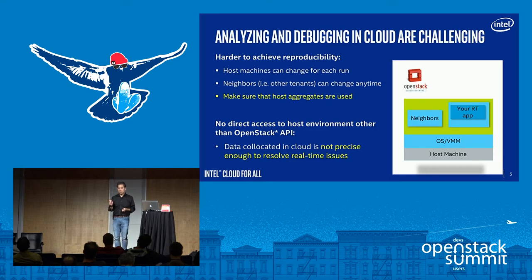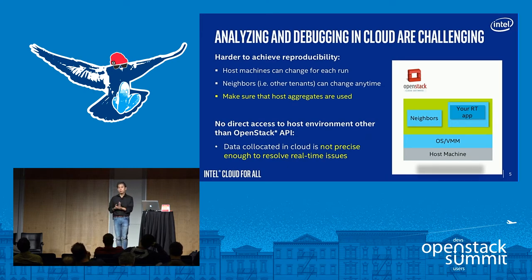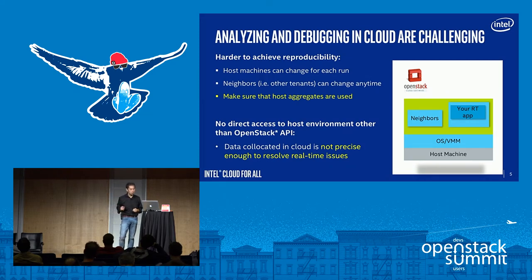Another challenge in the cloud is it's hard to get the performance data from the host machine. Because if you're running a VM or a process, the scope is very limited. You need to get the real performance data from the host machine. Today, the OpenStack API doesn't provide that kind of information, especially for real-time. Today's data is not precise enough to resolve real-time issues. I'll have some proposals to enhance this.